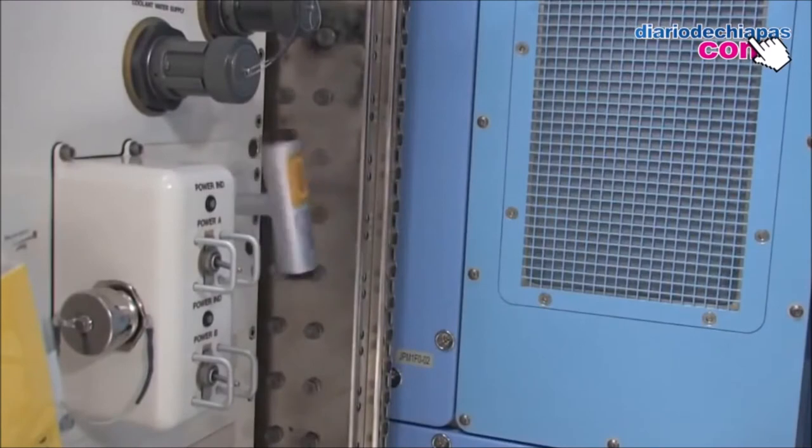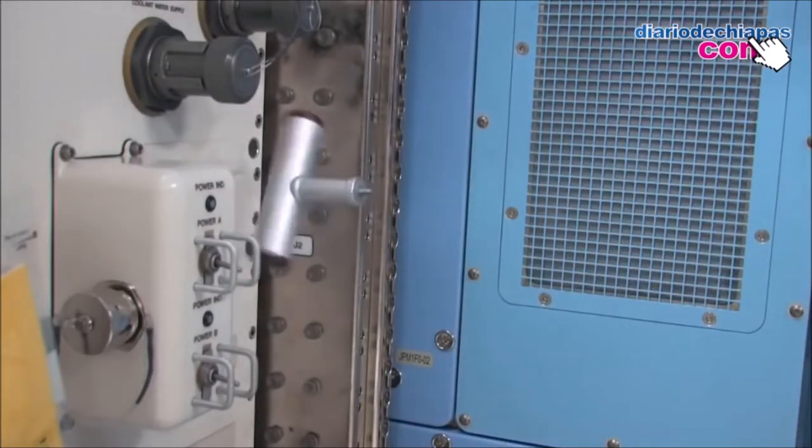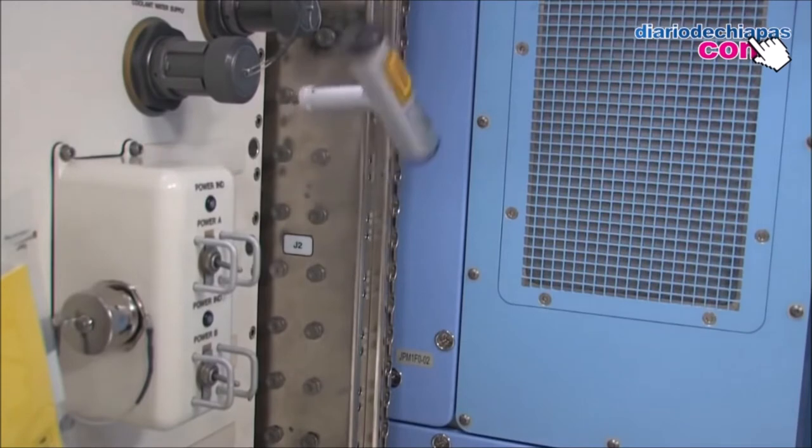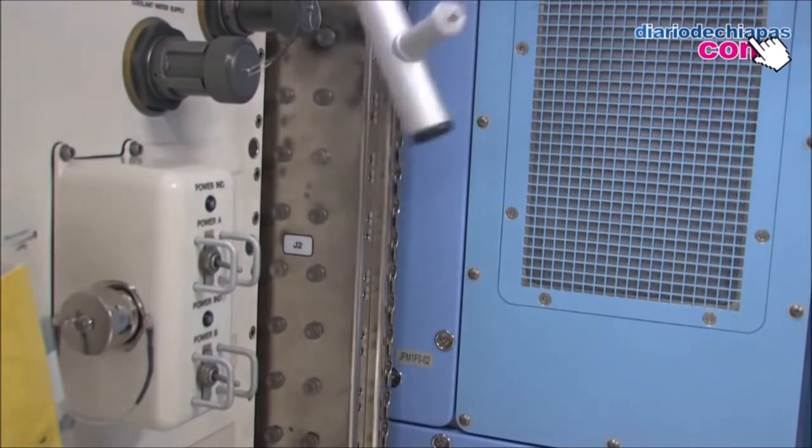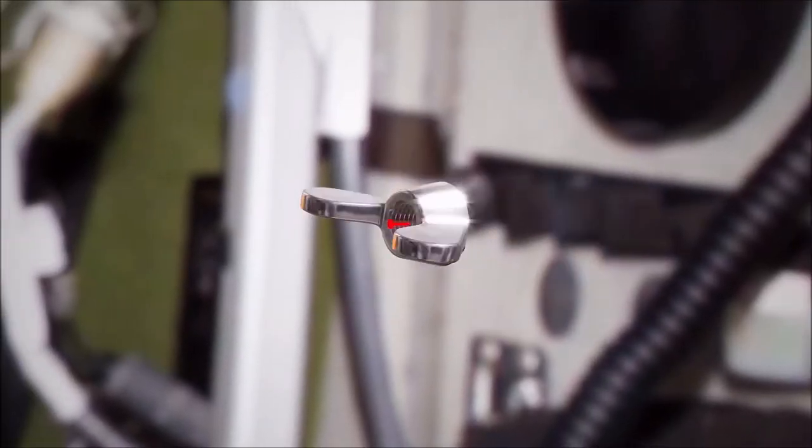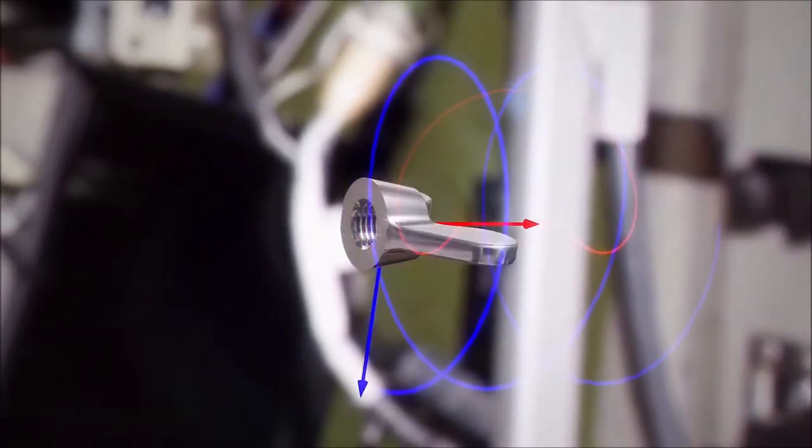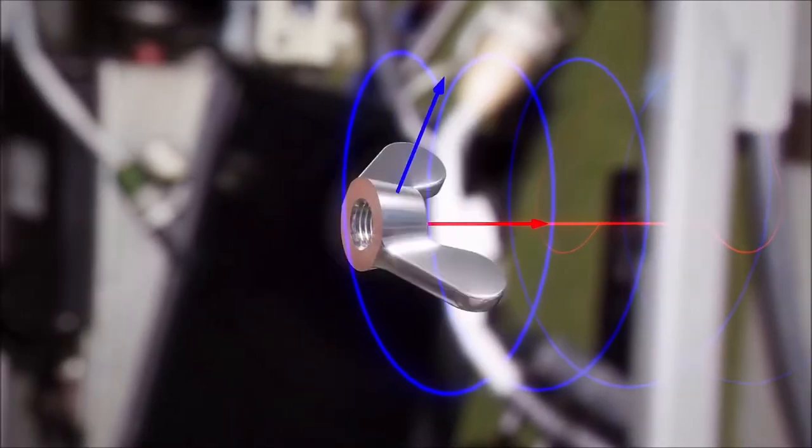This phenomenon was discovered in 1985 during the Soyuz T-13 mission where the astronaut Vladimir Dzhanibekov observed that an asymmetric object that rotates on itself in zero gravity situations is constantly flipped at 180 degrees turns in the direction of the turn.